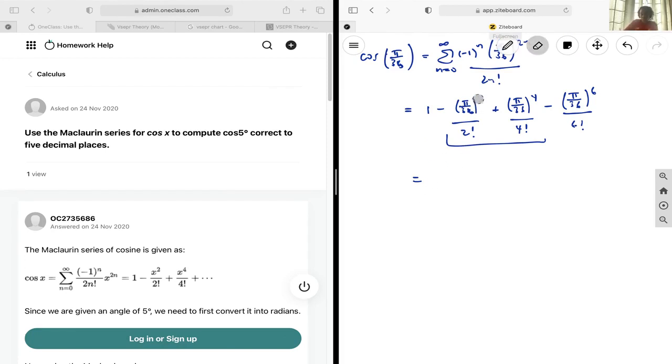and what you actually will get is going to be 0.99619228.